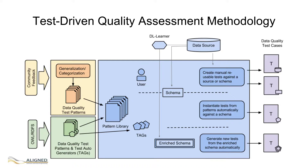RDFUnit automatically generates almost 10,000 data test cases based on the constraints defined by the ontology, which are applied against the triple store containing the release data.